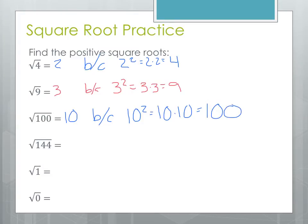Next, 144. The square root of 144, that's a bigger number but we can still find its square root, that's 12. Because 12 squared or 12 times 12 equals 144.